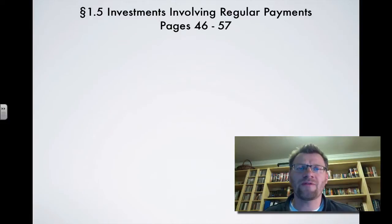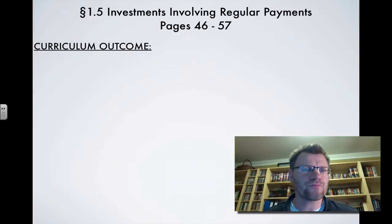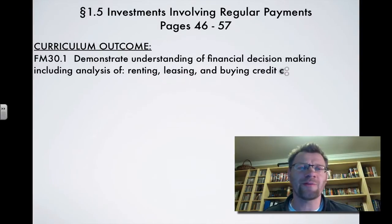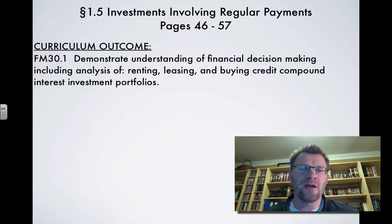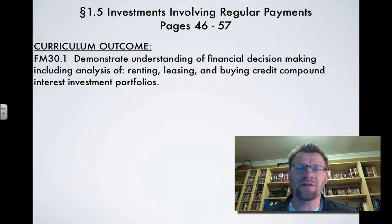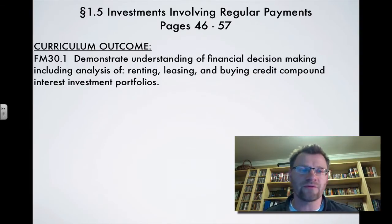Section 1.5 is investments involving regular payments, found on pages 46 to 57 in your text. Our curriculum outcome is to demonstrate understanding of financial decision making, including analysis of renting, leasing, buying, credit, compound interest, and investment portfolios.